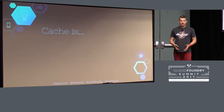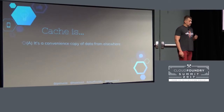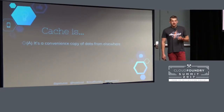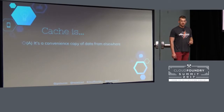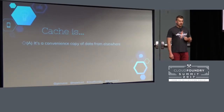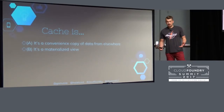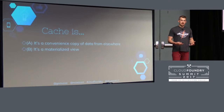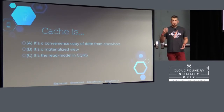Caches are everywhere. Any storage with a key-value access pattern can be considered a cache. The cache is basically a copy of the data, and the beauty is that access to this copy happens very quickly. Even if data is in a relational database in third normal form across multiple tables, when we cache it, we store it in a denormalized form — basically a read model in terms of CQRS.